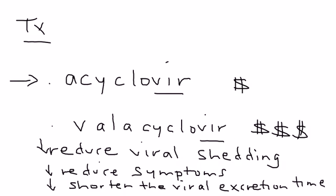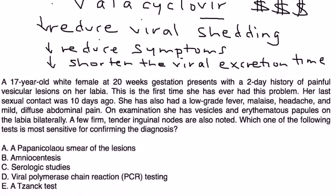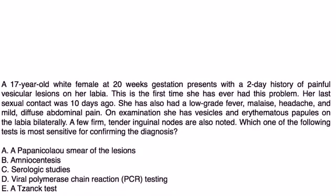Now let's take a look at some vignettes. A 17-year-old white female at 20 weeks gestation presents with a two-day history of painful vesicular lesions on her labia. This is the first time she has ever had this problem. Her last sexual contact was 10 days ago. She has also had low-grade fever, malaise, headaches, and mild diffuse abdominal pain. On exam she has vesicles and erythematous papules on the labia bilaterally. A few firm tender inguinal nodes are also noted. Which of the following tests is the most sensitive for confirming the diagnosis?